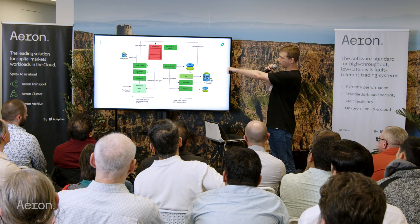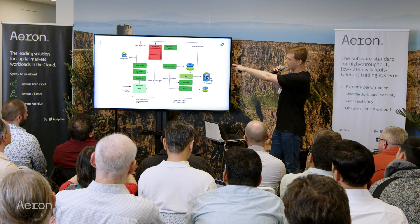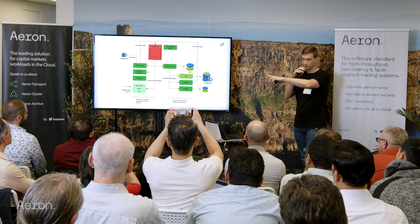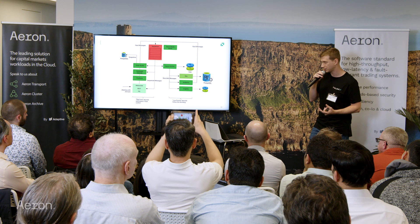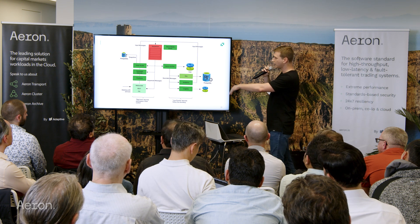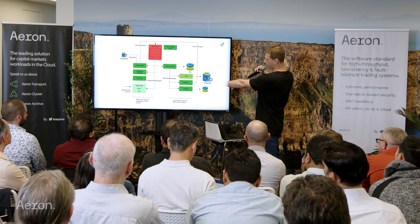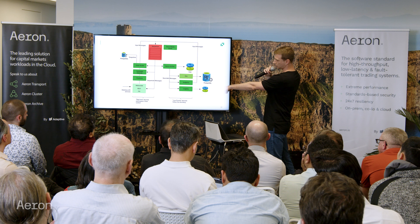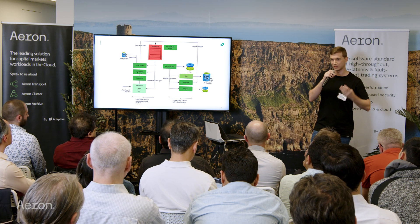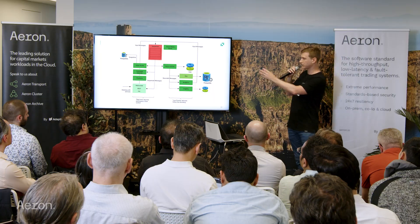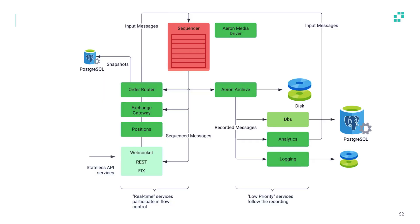The way we use the archive is that we are asynchronously archiving the messages — they are journaled asynchronously and written to disk. We have a couple of classes of services: some are low-priority, meaning they do IO and might have delays, so they follow the sequencer recording. Then we have our real-time services that participate in flow control, and those are all reading the same sequence stream.